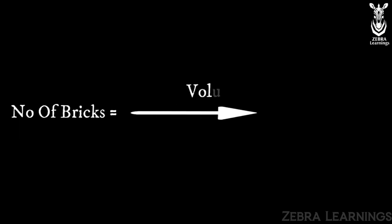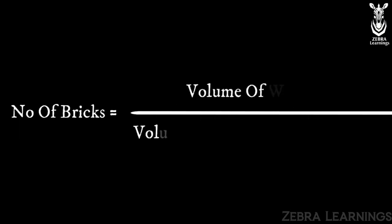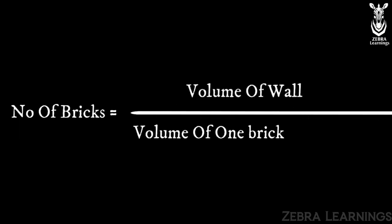Number of bricks is equal to volume of the wall divided by volume of one brick with mortar. When we divide the volume of the wall by the volume of the bricks along with the mortar, we can find out how many bricks we need.